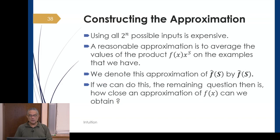To construct the approximation, because we cannot average over all 2ⁿ inputs, using this is expensive. A reasonable approximation is to average the values of f(x)·χˢ on the examples we have from the oracle. Moving forward in the example and in the next lecture, we'll represent this approximation as f̃(s). So f̃(s) is an approximation of f̂(s).